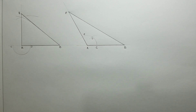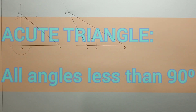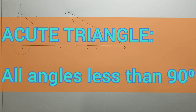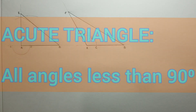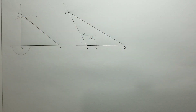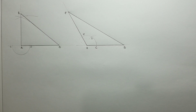I will now construct an acute triangle. This triangle consists of all angles less than 90 degrees. I will draw my AB line to measure 70 millimeters.